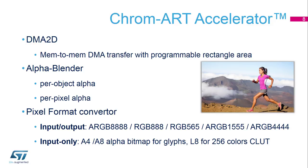The Chromart Accelerator contains a DMA2D, which allows memory-to-memory DMA transfer with programmable rectangle area. It contains an alpha blender that is able to perform per-object alpha, but also per-pixel alpha. The ST logo has a global alpha associated which makes it partly transparent, but on the glyph, only the part outside the character is fully transparent, while the pixels composing the character itself are fully opaque. The pixel format converter supports many formats in input and output, and some compact lookup table formats in input only — you cannot output a color lookup table format from the Chromart Accelerator.